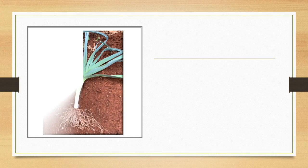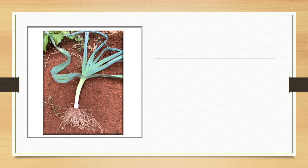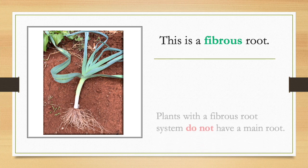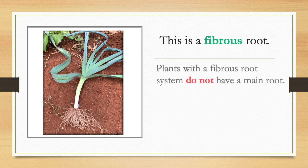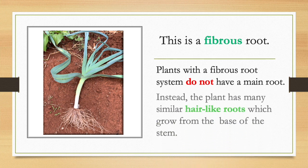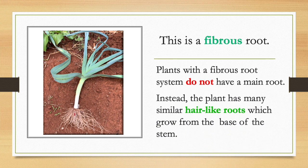This is a fibrous root. Plants with a fibrous root system do not have a main root. Instead, the plant has many similar hair-like roots which grow from the base of the stem.